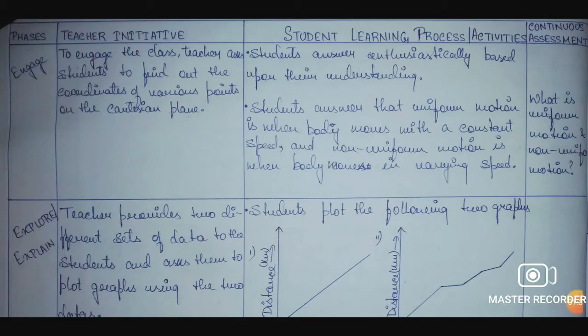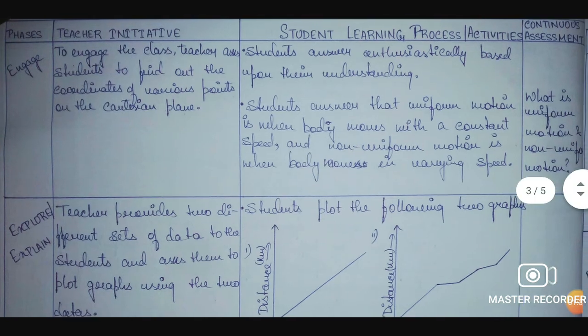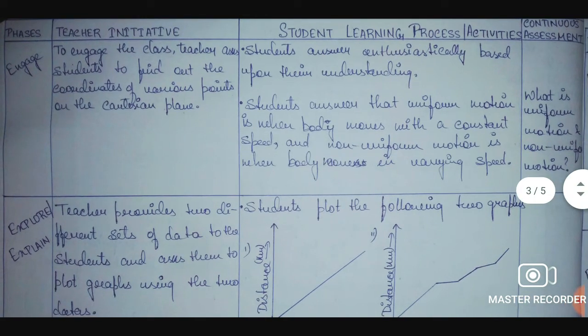So now that all these things are done we move on to draw our table. We begin with engage as this is a 5E lesson plan so we will move on to the next Es as well. There will be five phases in total.